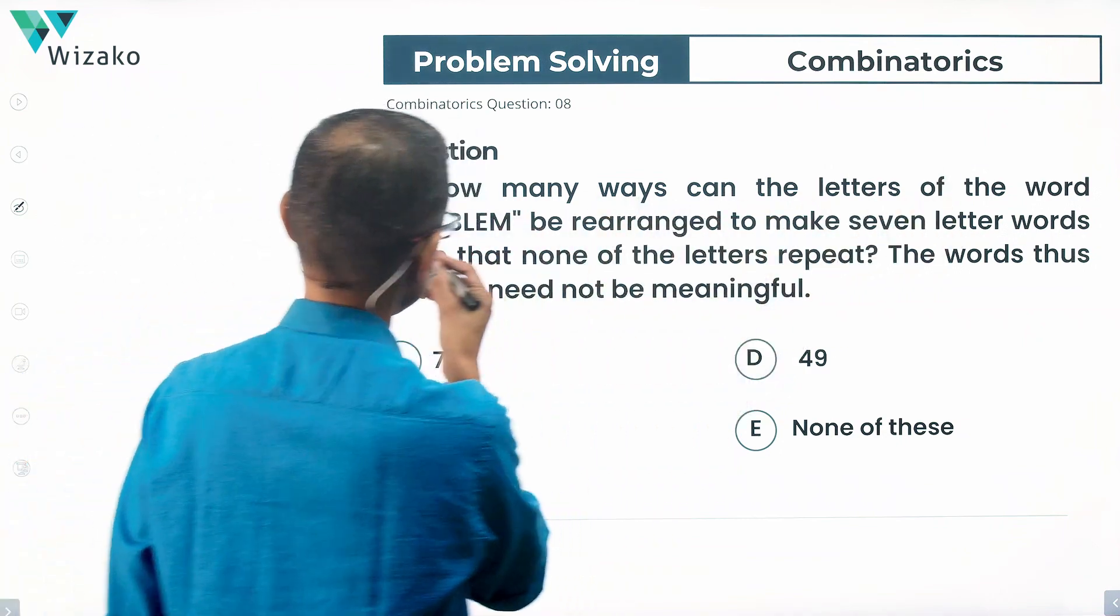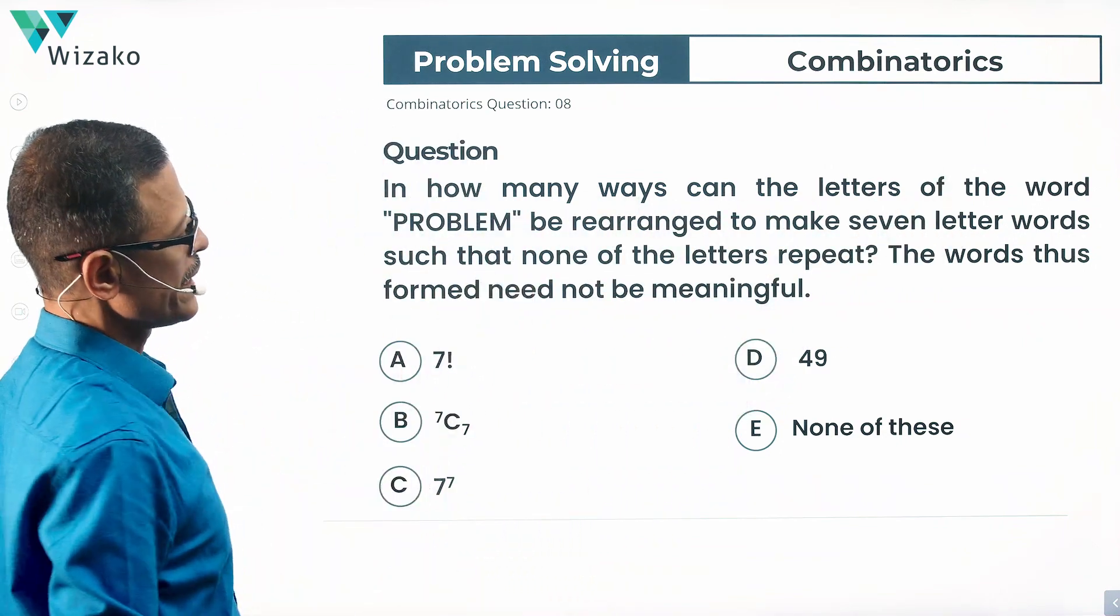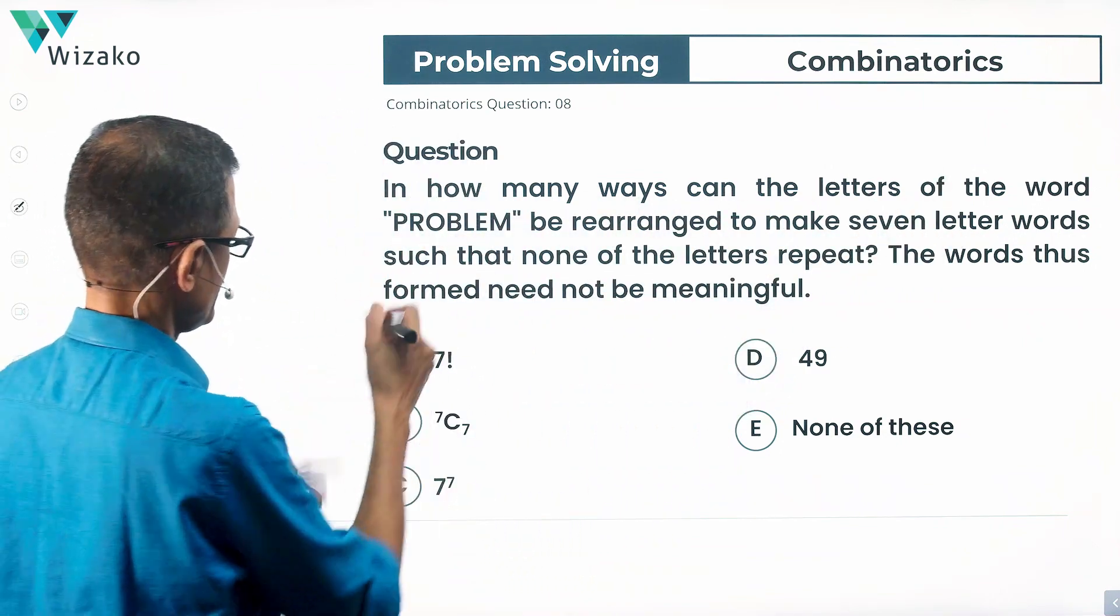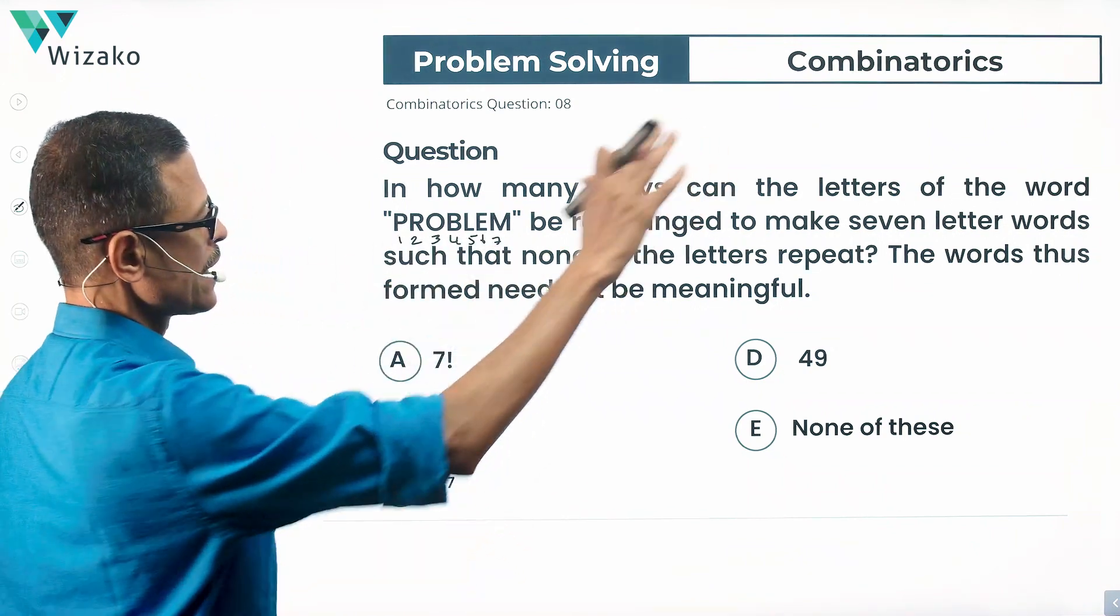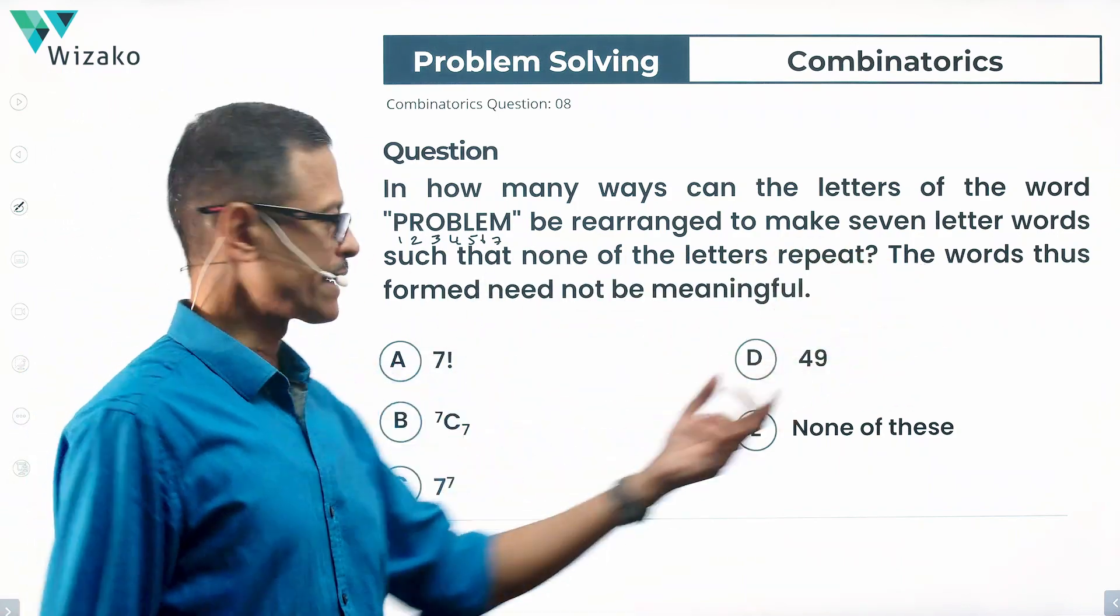In how many ways can the letters of the word problem be rearranged to make seven letter words? Is this a seven letter word? Yes. One, two, three, four, five, six, seven can be rearranged to make seven letter words such that none of the letters repeat.